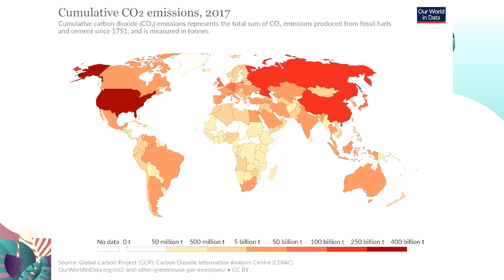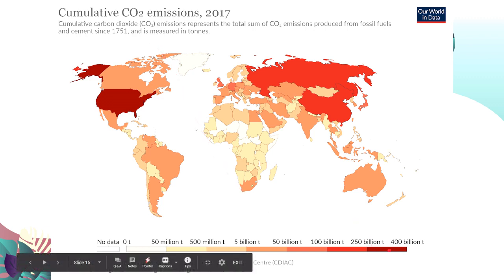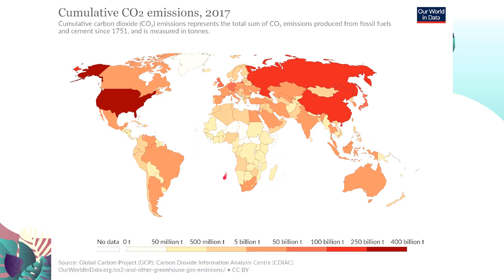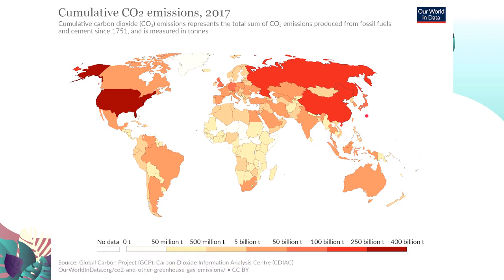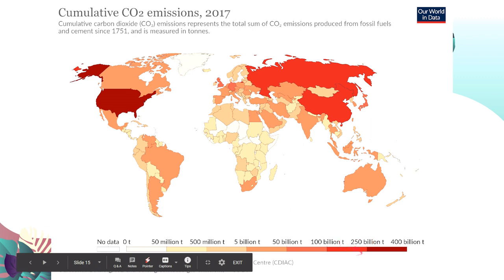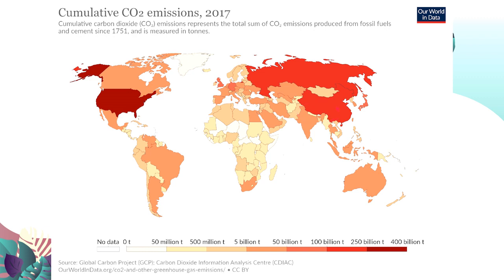You can visit 'Our World in Data' for more information. This map shows cumulative carbon dioxide emissions as of 2017 — the total sum of CO2 produced from fossil fuels and cement since 1751. Lighter-colored countries have the least emissions, from 50 million to 500 million tons — including Africa and the Philippines. Darker-colored countries have the most, from 250 to 400 billion tons — including the United States, Russia, and China.